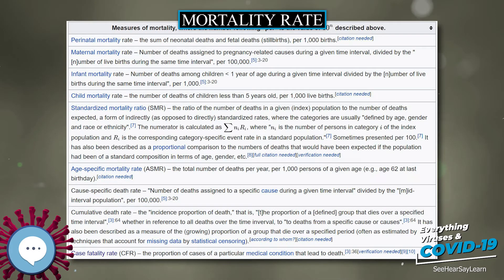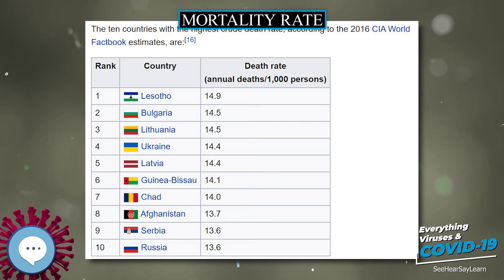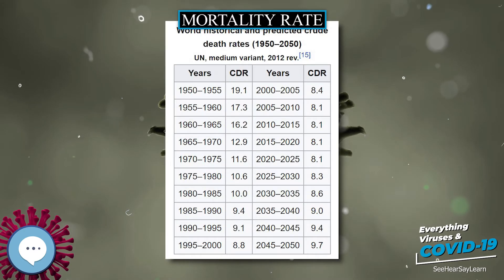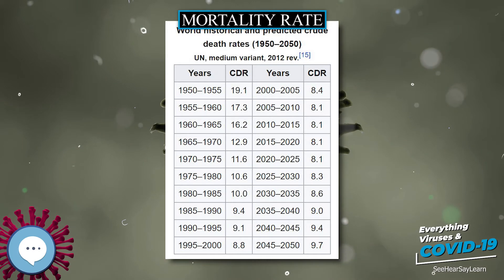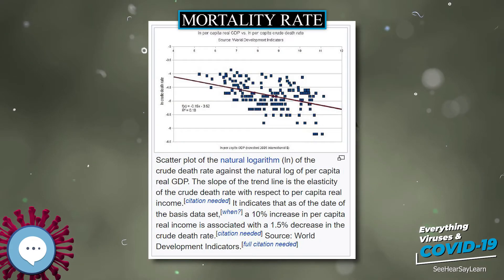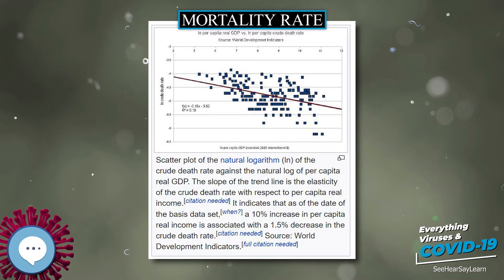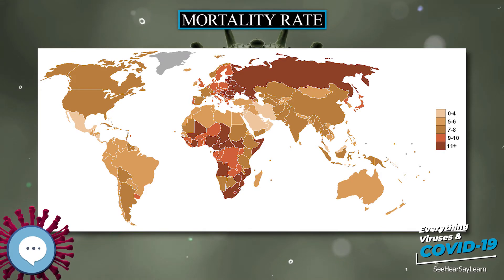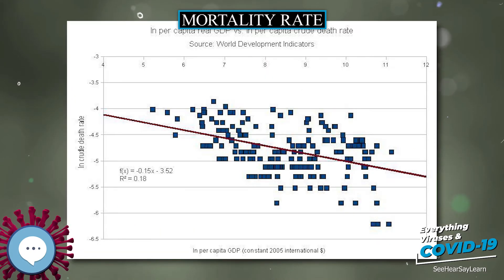As of 2020, the CIA estimates the U.S. crude death rate will be 8.3 per 1,000, while it estimates that the global rate will be 7.7 per 1,000. According to the World Health Organization, the 10 leading causes of death globally in 2016 for both sexes and all ages are presented in a table, with crude death rates per 100,000 population.